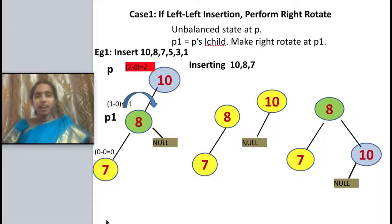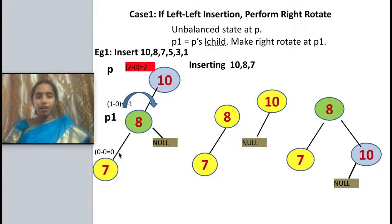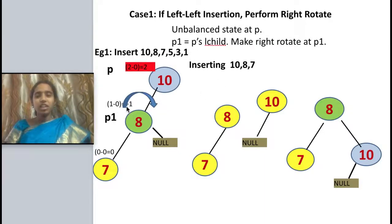In the last tutorials we saw the introduction for rotations in AVL trees. Now we will be seeing each case by case. The first case is inserting a node at the left sub-tree, specifically on the left side — a left-left insertion. If you are having such a case, you have to perform a right rotation.